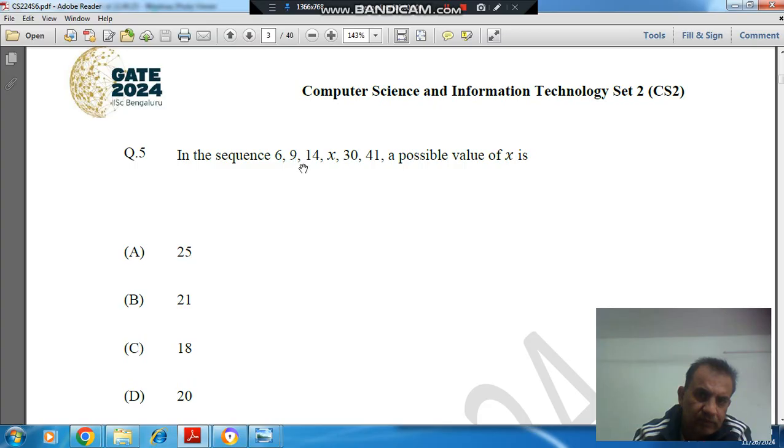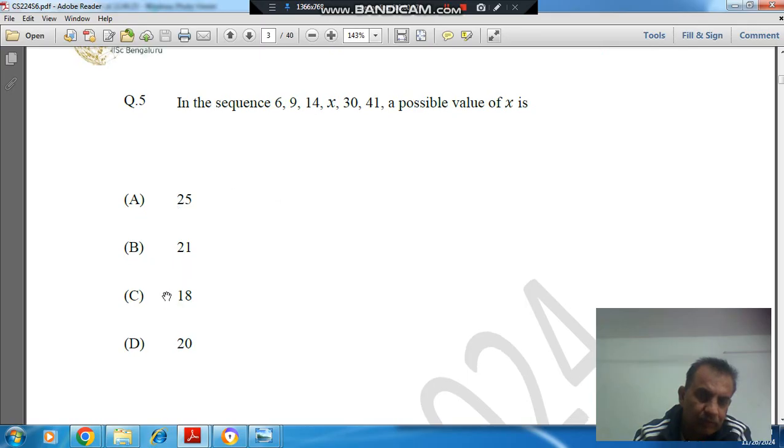In the sequence 6, 9, 14, X, 30, 41, a possible value of X is: Option A, 25. Option B, 21. Option C, 18. And option D, 20.